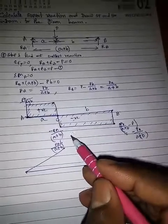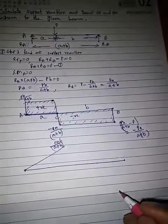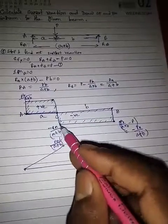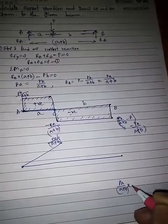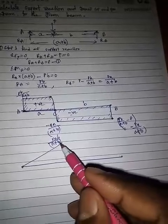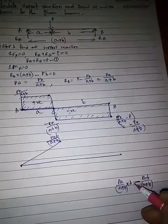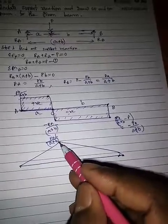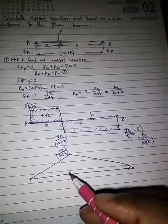For the portion from C to B, the shear force is negative so we subtract that area. The area of this portion is Pa/(a+b) into b, which equals Pab/(a+b). Subtracting this from the previous area gives zero at point B, completing the bending moment diagram. At the point where the shear force is zero, the bending moment is maximum.